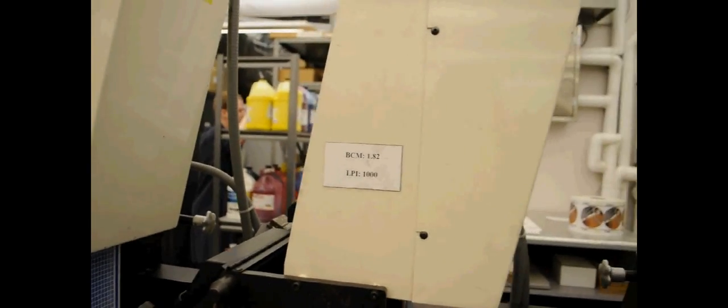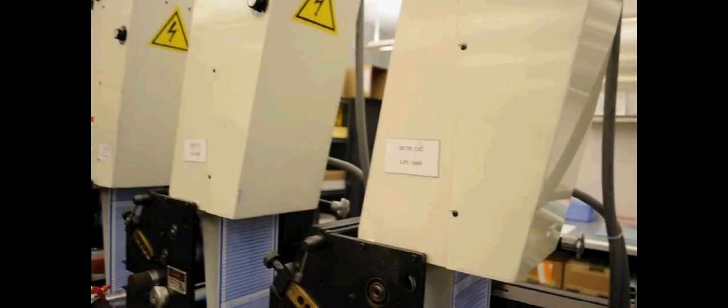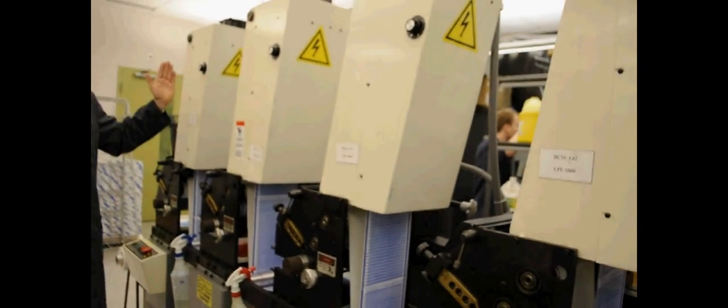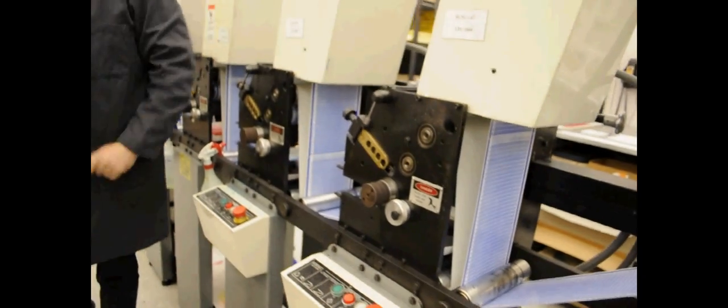So after our four print stations, we print also from light to dark. So the sequence is yellow, magenta, cyan and then black.